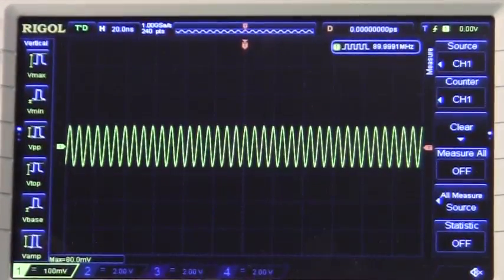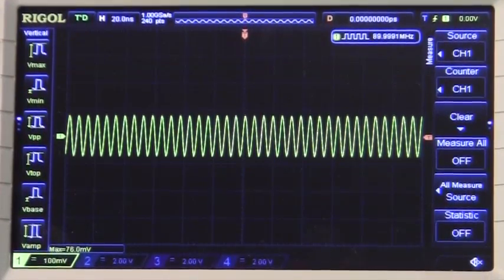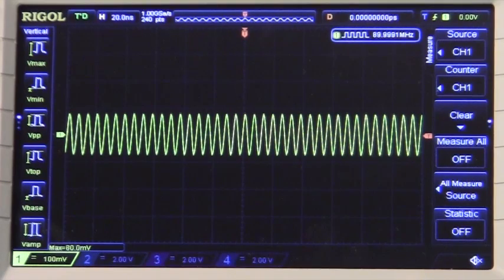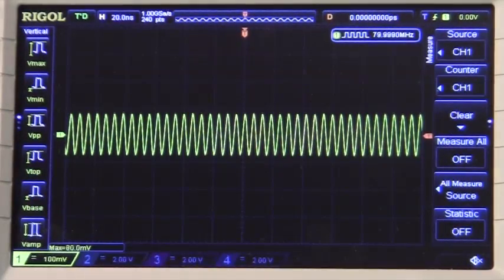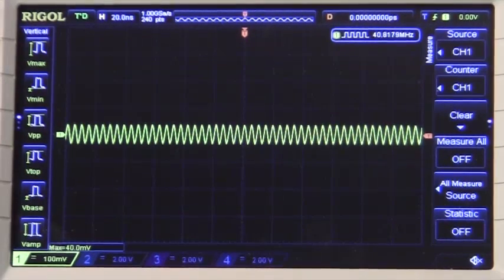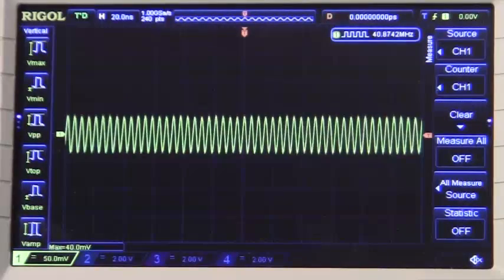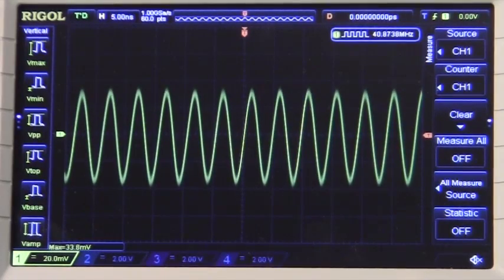This is beyond the frequency range of the probe. So we should see some drop-off due to the probe as well. But we are getting a higher level, 80 mV. Okay, we'll continue upwards, 170 MHz, and we have 80 mV again. But strangely enough, the oscilloscope is measuring 40 MHz here. So let's try to increase the amplitude. Something strange. But let's continue upwards.